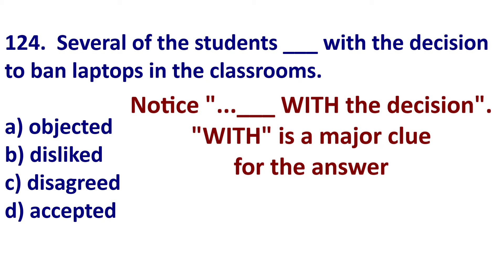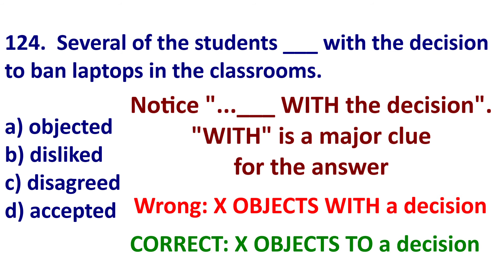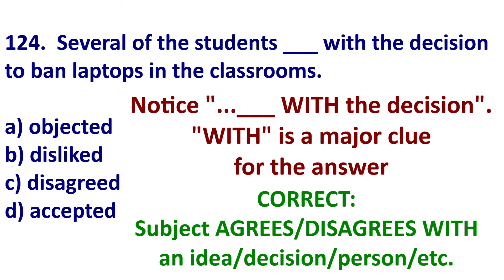One more example: 'Several of the students blank with the university's decision to ban laptops.' If I use 'object,' it's 'I object to' something — but the preposition here is 'with.' Which word connects with 'with'? Disagree. 'I disagree with an idea,' 'I disagree with an opinion.' So right away, I can get the answer because of that preposition.